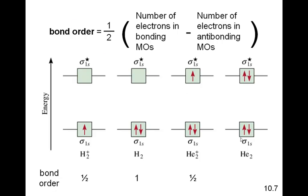And for the He2 molecule, there's two bonding and two anti-bonding, and when we subtract those, we get zero, and half of zero is still zero.